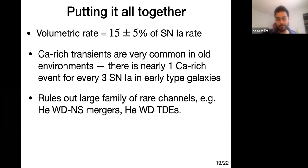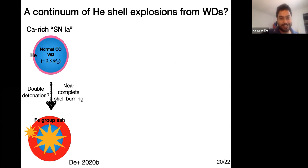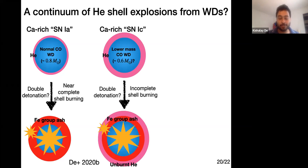This high rate rules out many exotic channels like white dwarf neutron star mergers or white dwarf TDEs. Empirical modeling of the explosion properties is consistent with a picture where all these explosions come from helium shells on low mass white dwarfs — a 0.8 solar mass white dwarf with a thin helium shell produces calcium-rich transients consistent with observations. As you go to lower mass white dwarfs you get fainter explosions that progressively become more helium-rich, and at the lowest mass white dwarfs you get very incomplete helium burning producing spectra that look helium-rich.